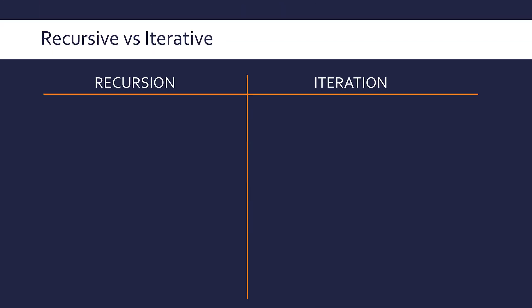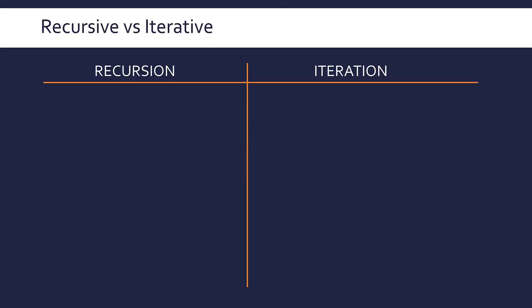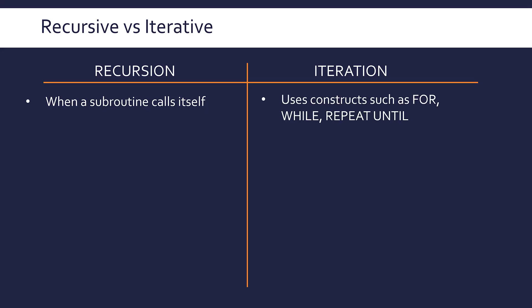If you look at code and want to figure out if it's recursive or iterative: if it's recursive, it's when you can see a subroutine — a function, procedure, or method — calling itself. Whereas if it's just using for loops, while loops, repeat-until loops, do-while loops, or any other version of those, it is using an iterative approach.